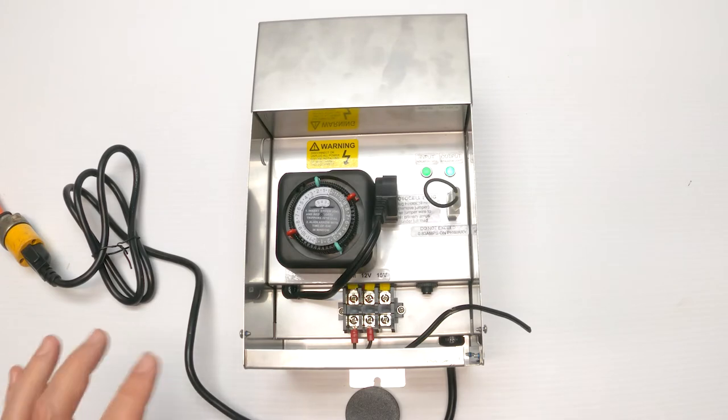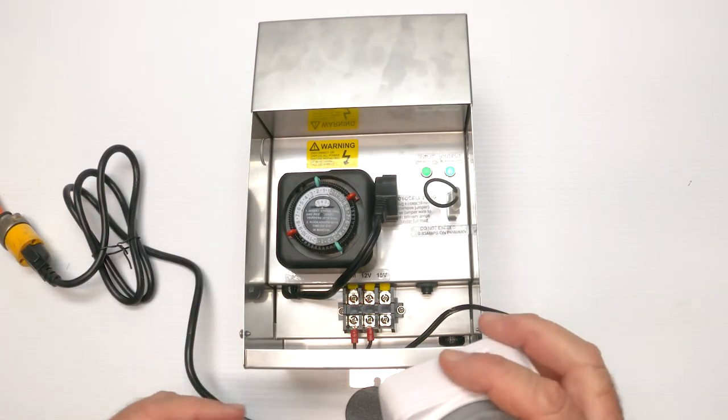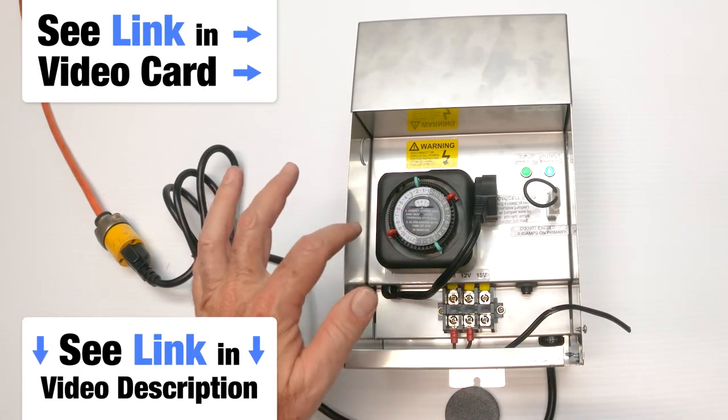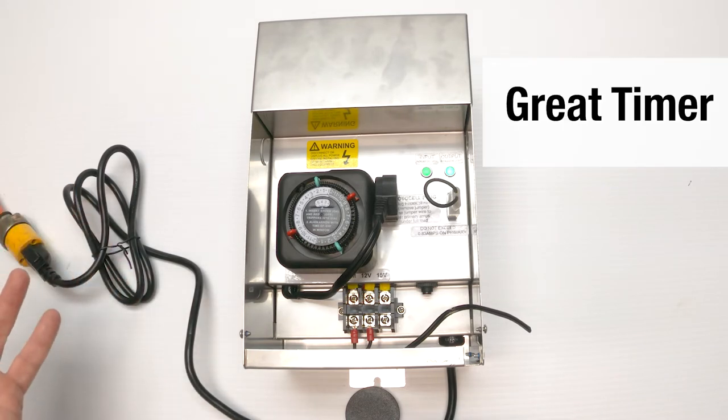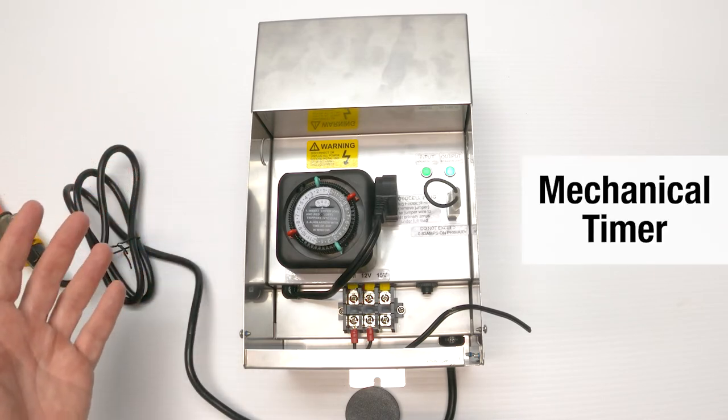So in the previous section, you saw me install the timer and how simple it was. Now we went kind of looking for some other timers. This is the timer that we offer as an option. It's an Intermatic timer. It's been around forever and people love it because it just works. It lasts a long time. Eventually it will fail because it's a mechanical device.